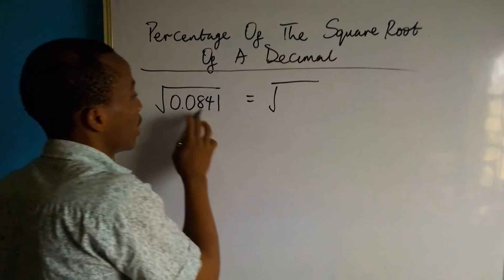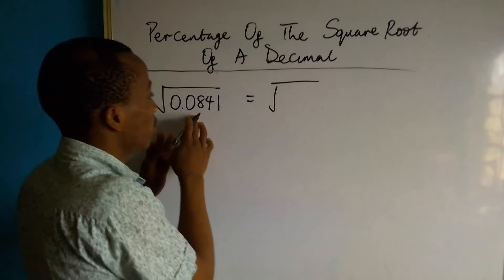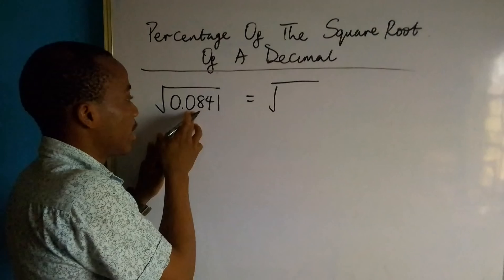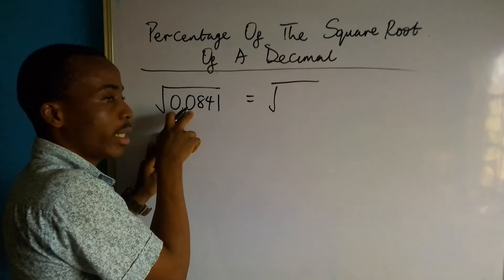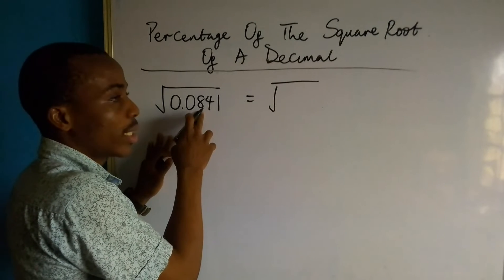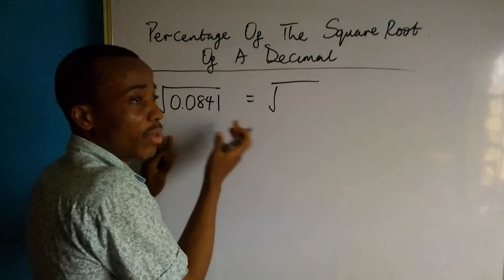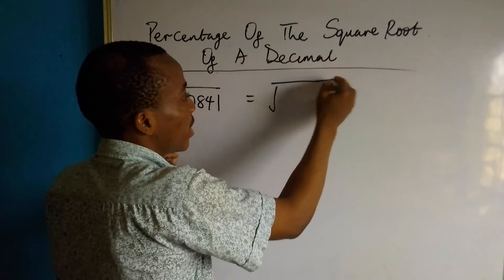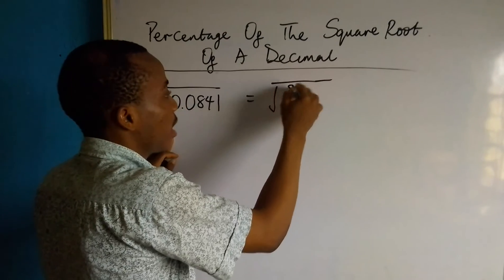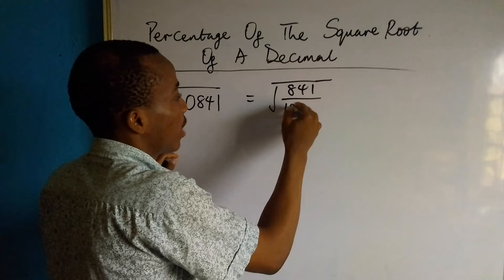This can be seen as the place value of this number after the point. This is 10th, 100th, 1000th, and 10,000th. So if we express this as a fraction, we have it as 841 over 10,000.